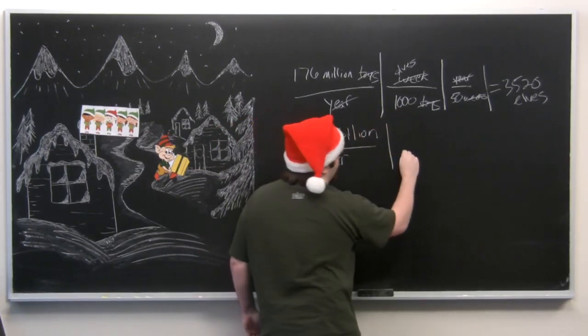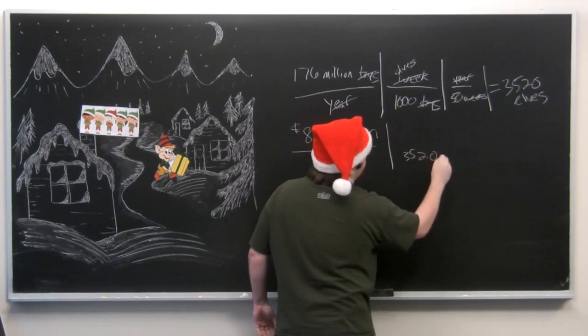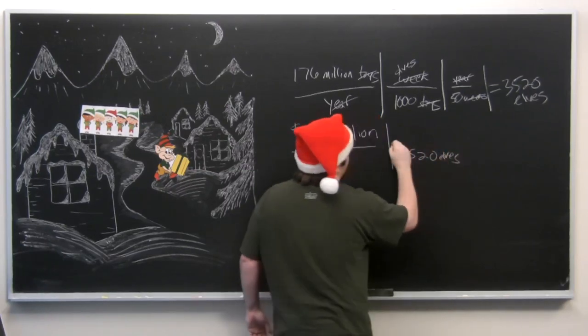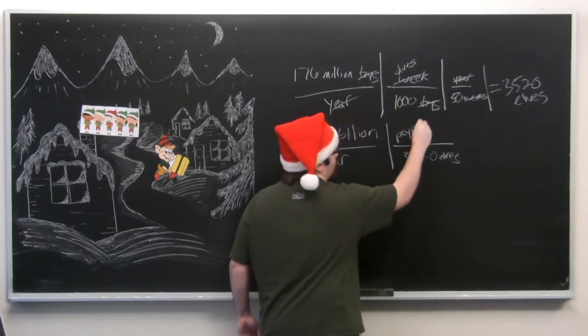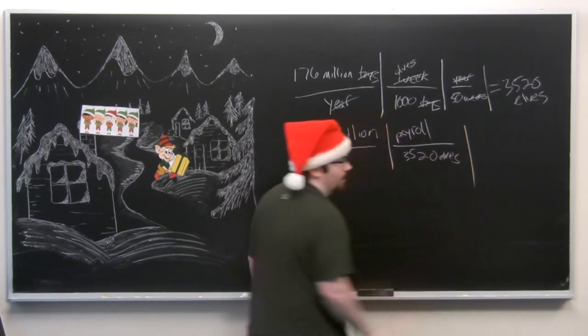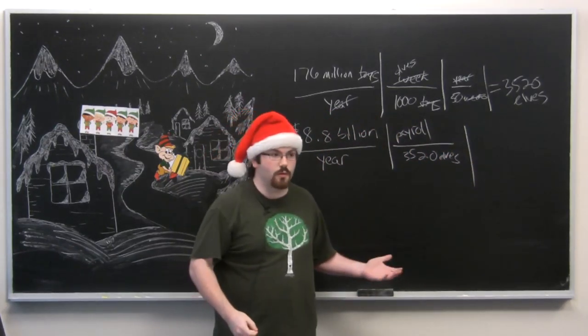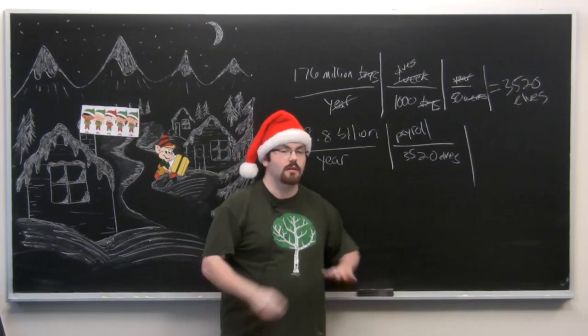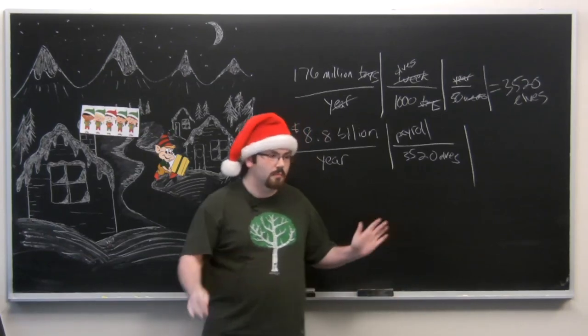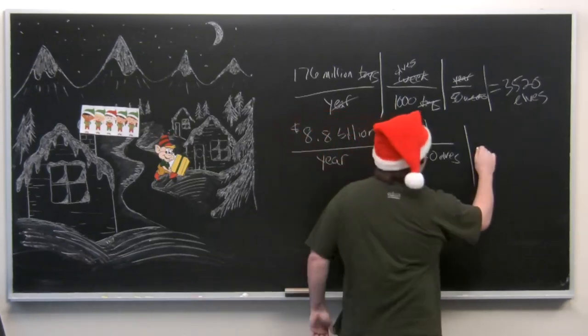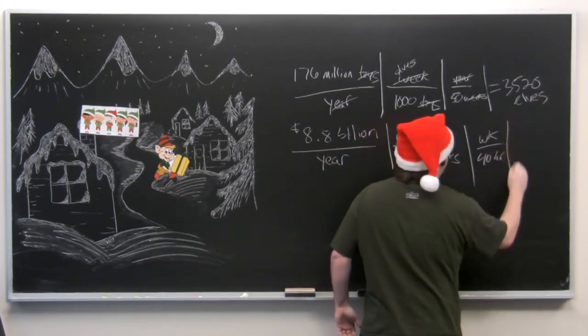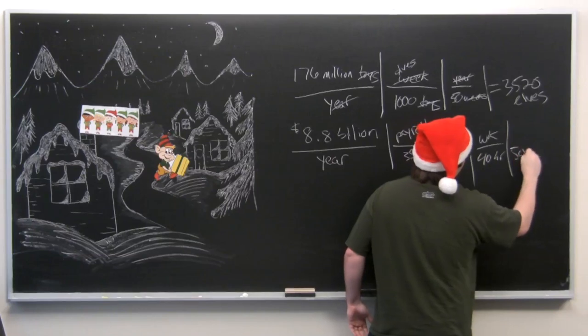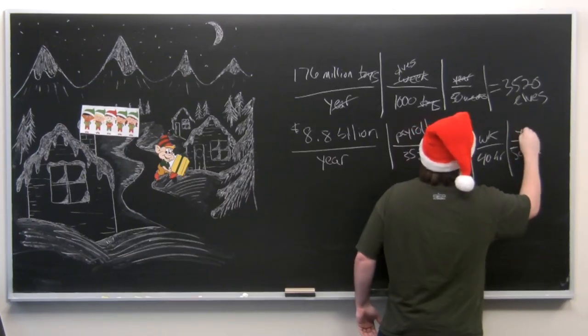With an estimated $8.8 billion of toys sold each year, and we said there are 3,520 elves that need to split all this money every year. And as we said with the work weeks, they work 40 hours a week, not including any Christmas overtime, but we'll just assume 40 hours a week, 50 weeks of the year.